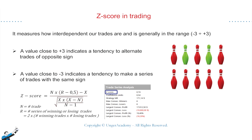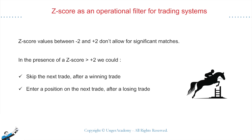Now that we know this metric, how can we take advantage of it? It doesn't happen often that a strategy has a Z-Score greater than 2 or less than negative 2. And if we applied this logic to strategies with a Z-Score between negative 2 and positive 2, we wouldn't get satisfactory results. However, if we were to find strategies with a Z-Score value greater than positive 2, we would have a good chance of seeing trades that alternate between winning and losing trades. In this case, we could improve our system by skipping the next trade after a winning trade, and then opting for trading after a losing trade has occurred.